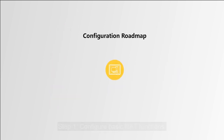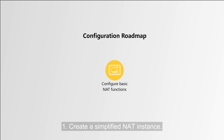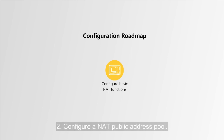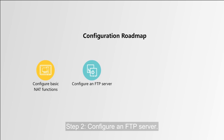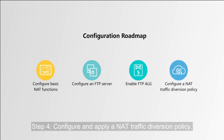Here is the configuration roadmap. Step 1: configure basic NAT functions — sub-step one, create a simplified NAT instance; sub-step two, configure a NAT public address pool. Step 2: configure an FTP server. Step 3: enable the FTP ALG function. Step 4: configure and apply a NAT traffic diversion policy.